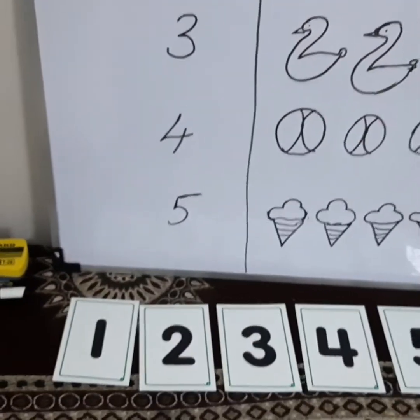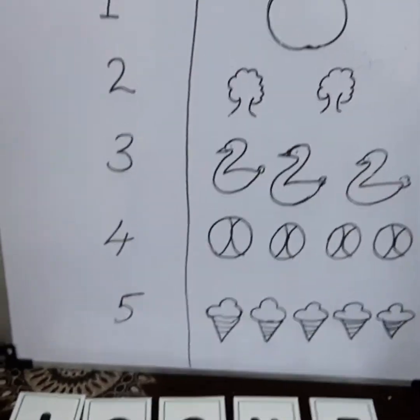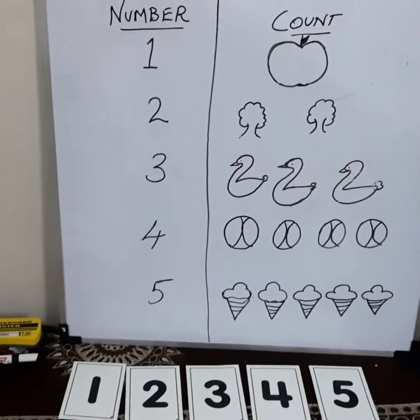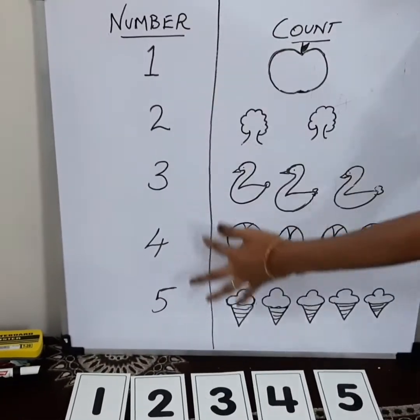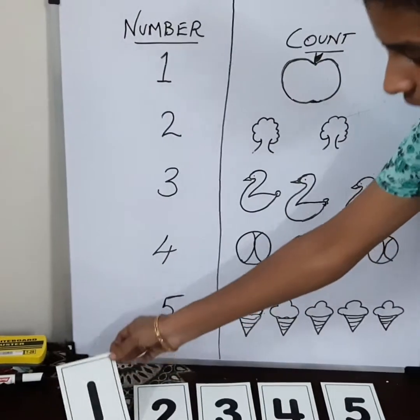Hi kids! Welcome! We are going to see about numbers. Okay? Shall we read numbers 1 to 5? Yes! We will go one by one.